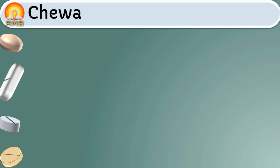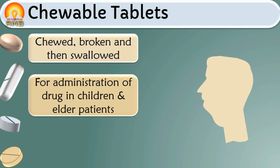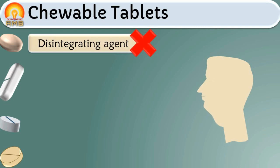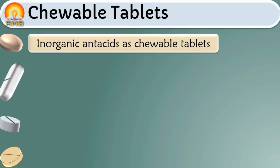The next type is chewable tablets. As the name indicates, these tablets are intended to be chewed in the mouth and broken into smaller pieces before swallowing; they are not intended to be swallowed intact. These are mainly prepared for administration of drugs to children and elderly patients who have difficulty swallowing an entire tablet. Since they are chewed into smaller pieces prior to ingestion, there is no need for a disintegrating agent in the formulation. Disintegration time is reduced by chewing, and the rate of absorption of the medicament is increased.